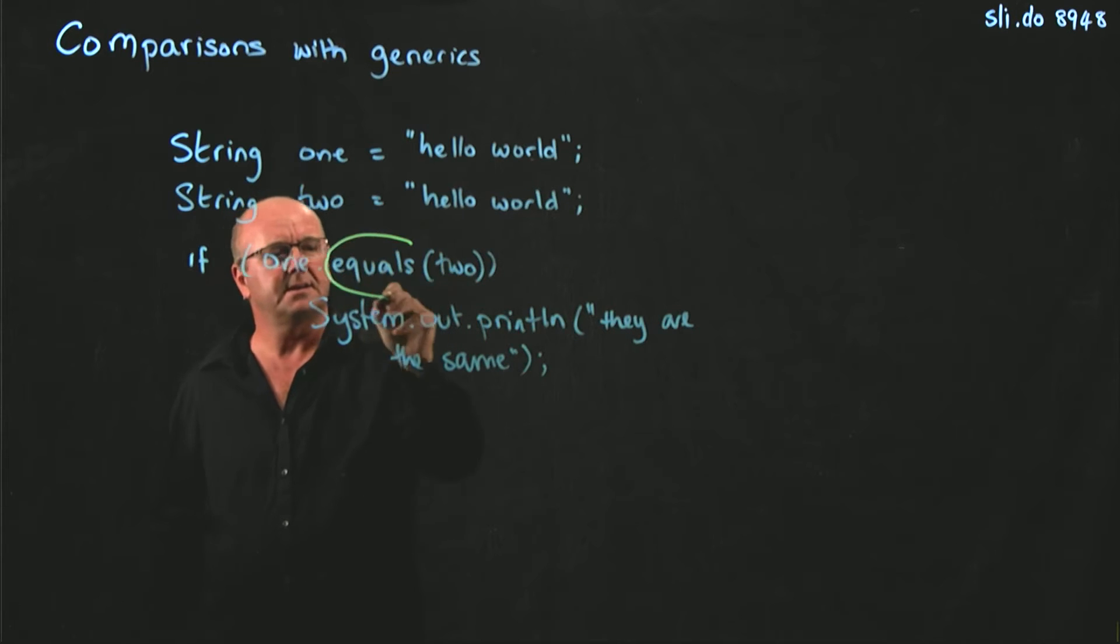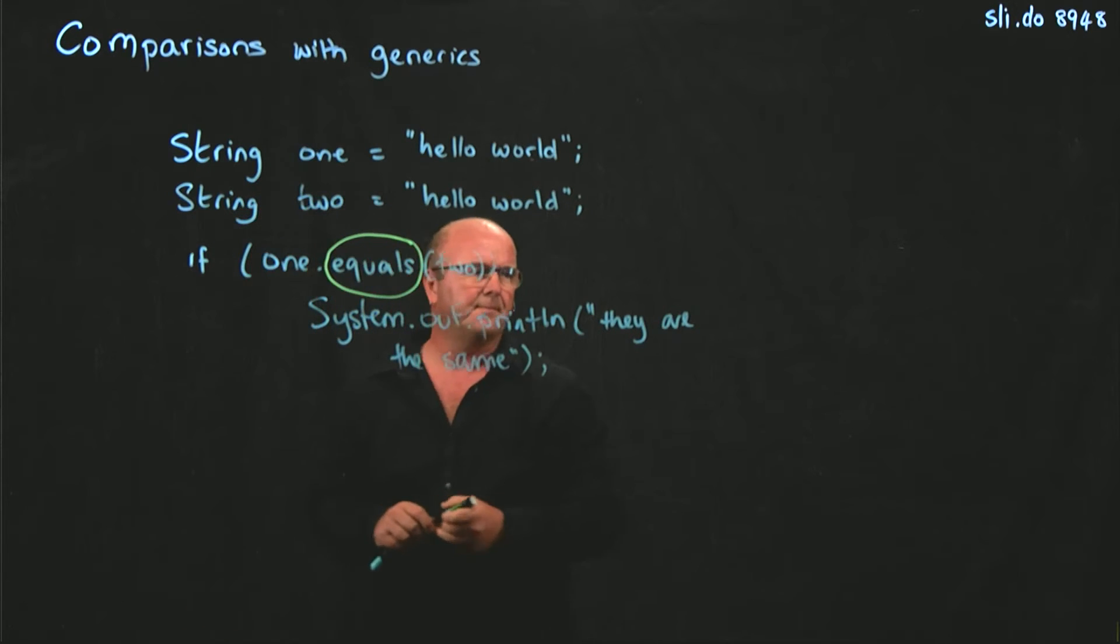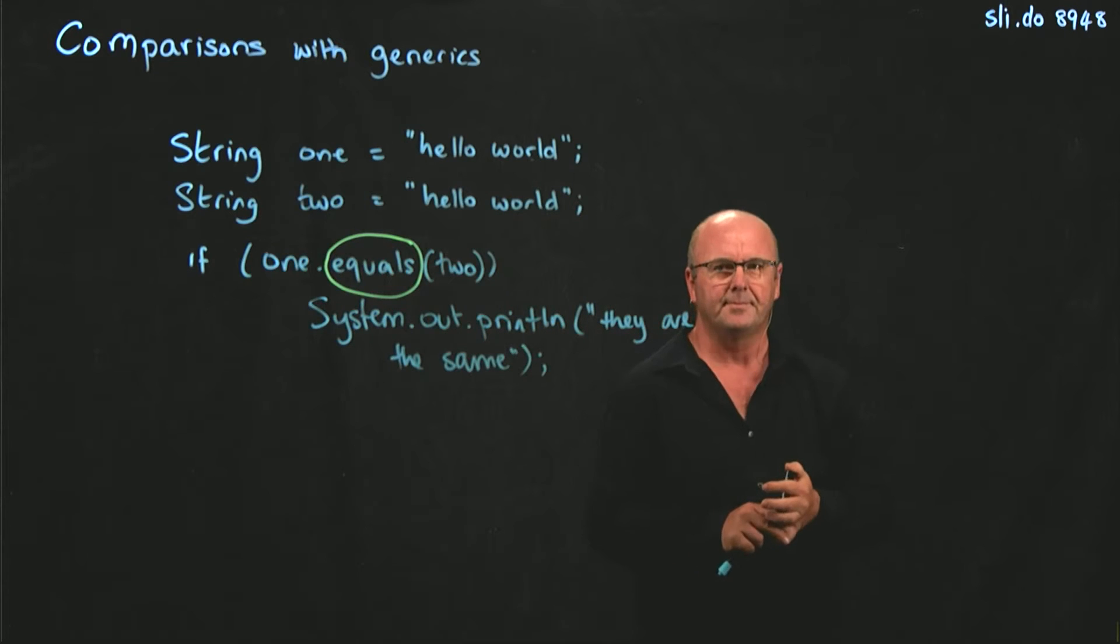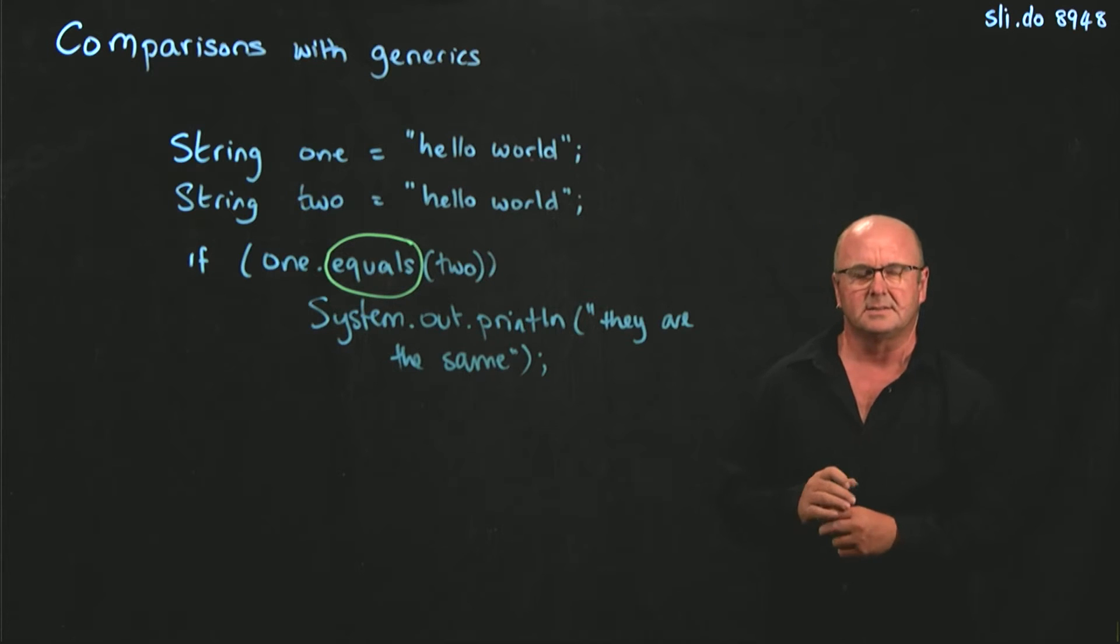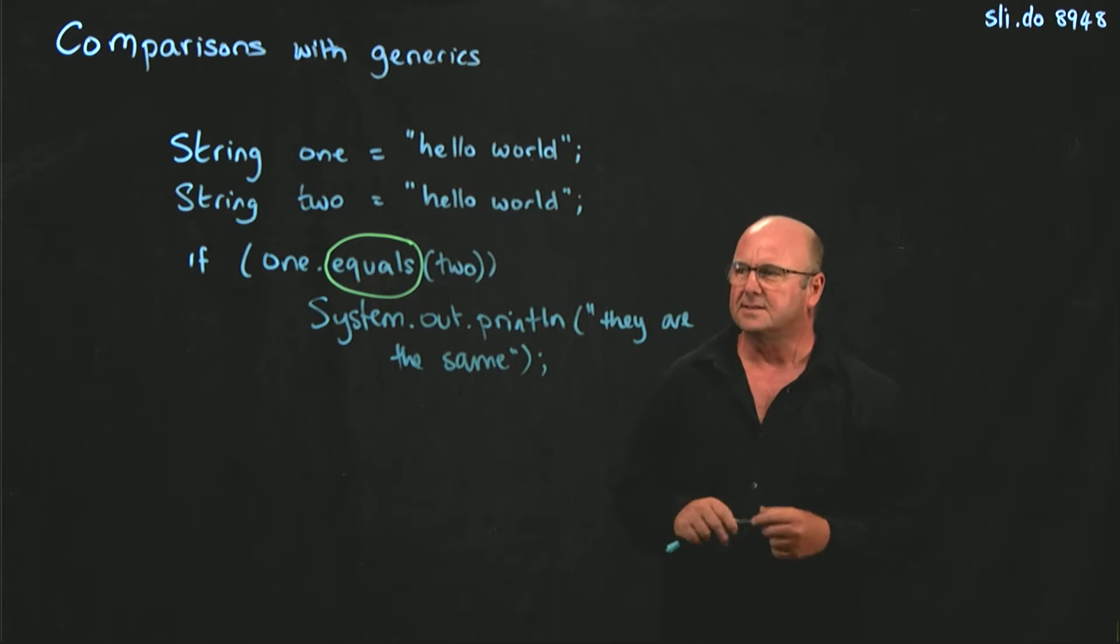Where is this equals method? It's in the object class. Is it in the object class?